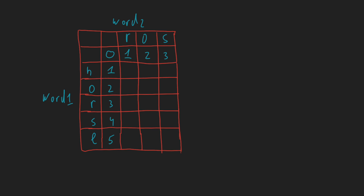Now let's compare characters. We compare h with r — they are not equal, so it's plus one. We take the minimum of the three neighboring cells: when word one is empty with only r, word two is empty with only h, or both are empty (zero). So zero plus one gives us one. We set one here.